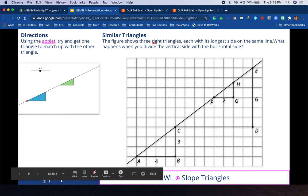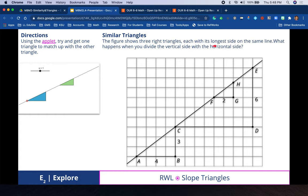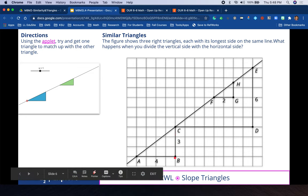For example, if I'm looking at the vertical distance - let me pull up the directions here - similar triangles, we're going to show that these right triangles, each with its longest side on the same line, which is that hypotenuse for all three of these, what happens when you divide the vertical side with the horizontal side? Notice they said vertical first, divided by the horizontal. So let's look at the vertical first. If this is 3 divided by the horizontal, 4, then that is three-fourths, which is 0.75.